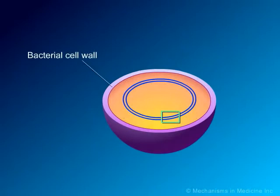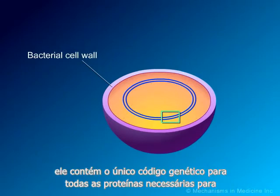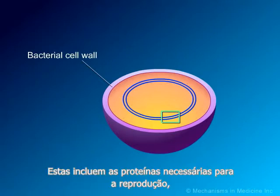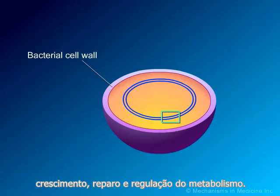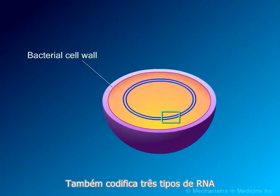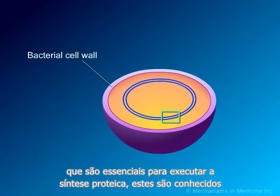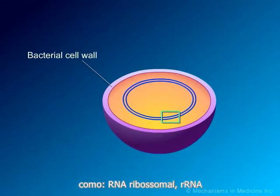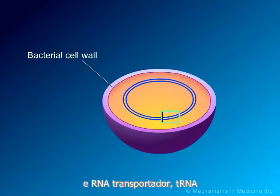The DNA is shown as a circular double strand within the bacterial cell. Like the DNA of all living organisms, it contains the unique genetic code for all of the proteins required for bacterial survival. These include the proteins required for reproduction, growth, repair and regulation of metabolism. It also codes for the three kinds of RNA that are essential for carrying out protein synthesis: ribosomal RNA, messenger RNA, and transfer RNA.